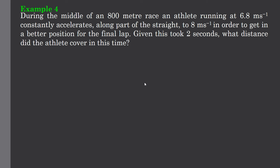Example number 4. During the middle of an 800 meter race, an athlete running at 6.8 meters per second constantly accelerates along part of the straight to 8 meters per second in order to get in a better position for the final lap. Given this took 2 seconds, what distance did the athlete cover in this time?